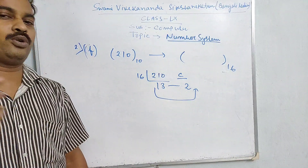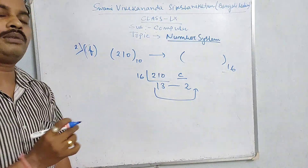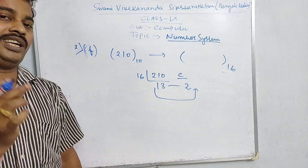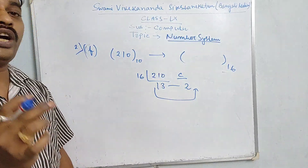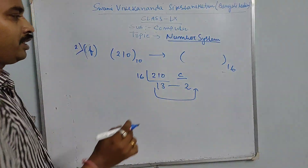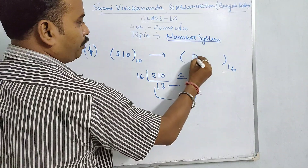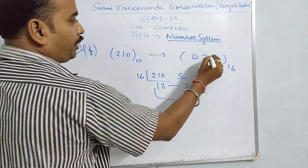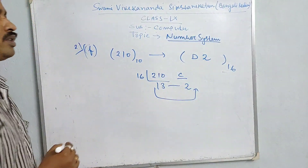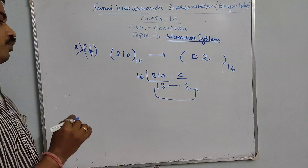Note that A is 10 in hexadecimal, and 13 is D. So the answer is D2. 13 is D — is that clear?